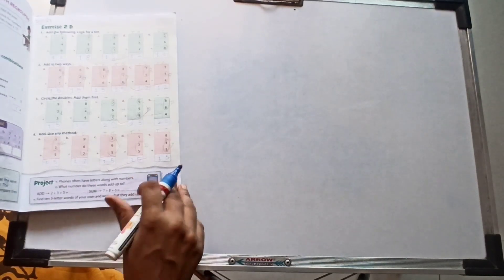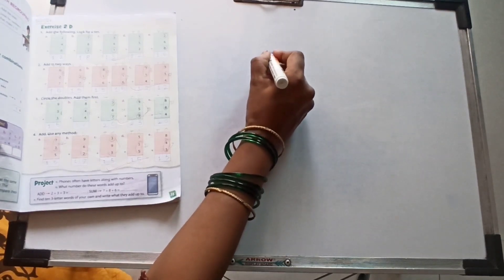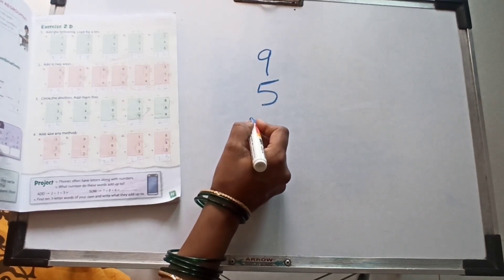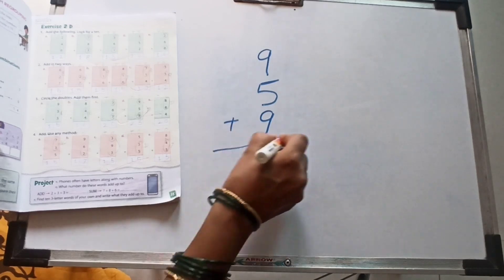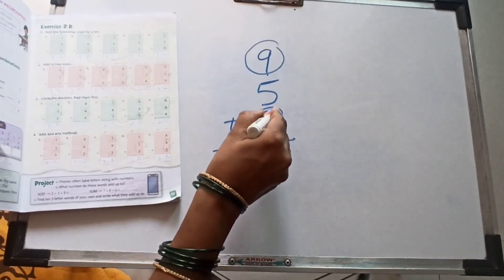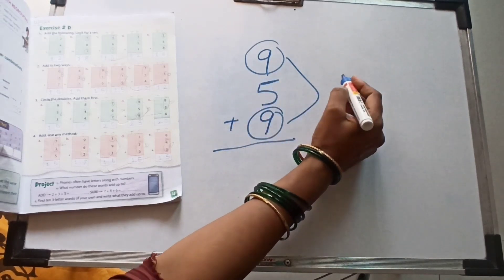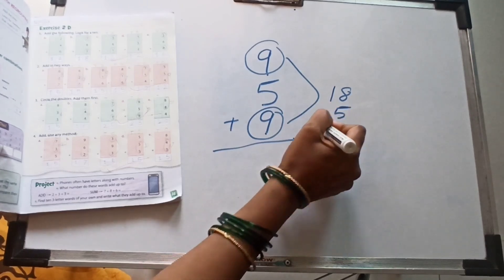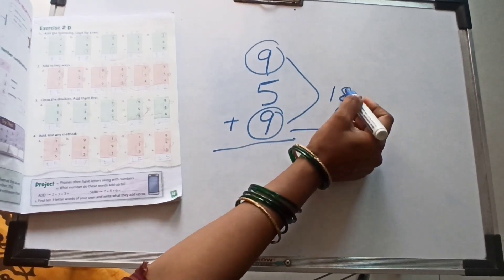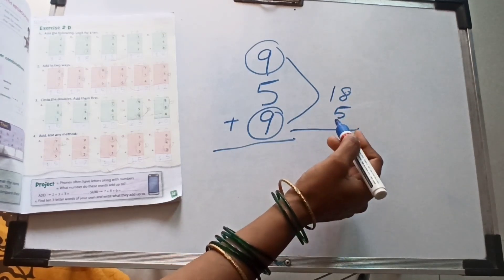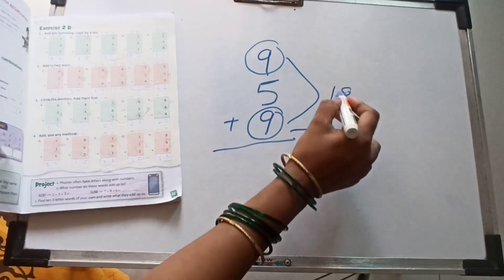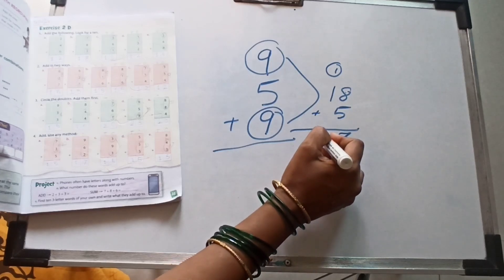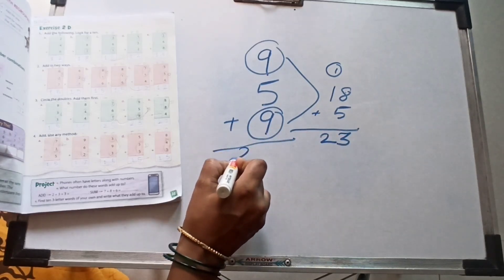Now next one sum, D. 9 plus 5 plus 9. This one 9 number, first one, this one, last one. 9 number. 9 to the 18 and 18 plus 5, 8, 5, 13, 1 carrying over, 1 plus 1, 2. Our answer finally 23.